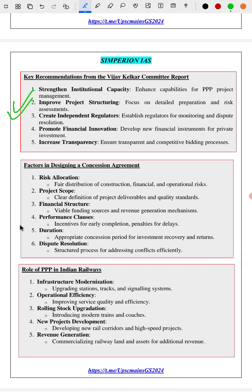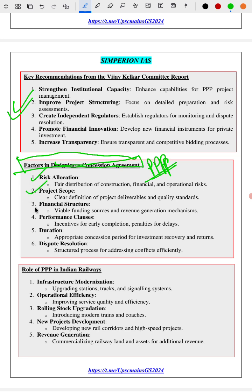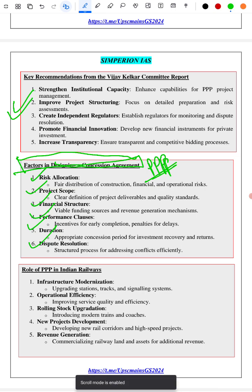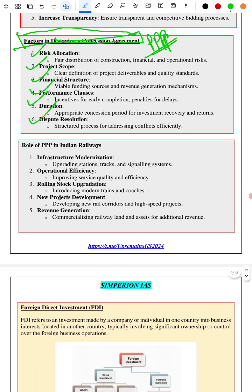Next we have given the Vijay Kelkar Committee recommendations on strengthening PPP. Concession agreements are part of PPP, and we have covered the factors considered while designing a concession agreement: risk allocation, project scope, financial structure, performance clause, duration, and dispute resolution. Very few study materials cover this particular topic, but we have covered it because it appears in previous year questions.